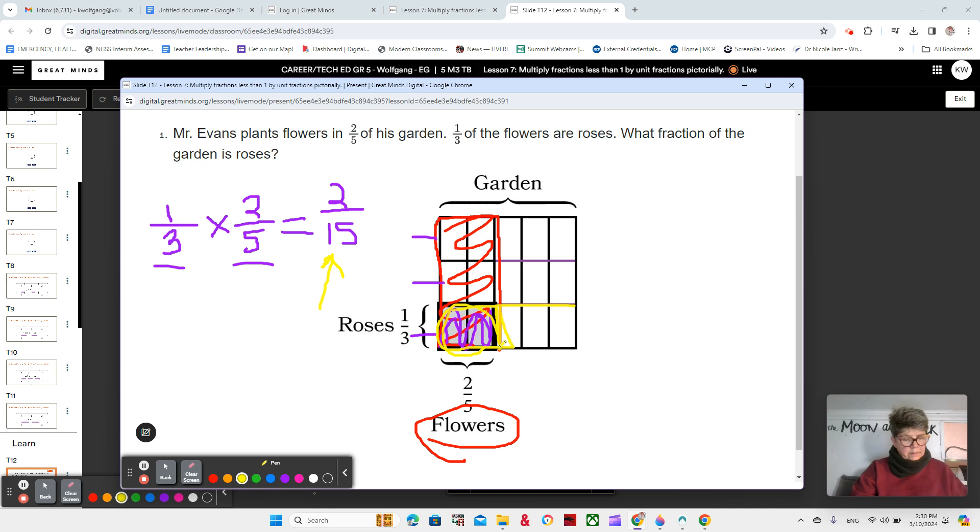And then this size of the answer is this section right here. Okay? So, two fifteenths. Actually, this should be the whole one third. There we go. Sorry about that. So, two fifteenths is smaller than one third and smaller than two fifths. Does it make sense that the product is less than two fifths? Yes, because we're talking about one third of the two fifths. All right. Very good.